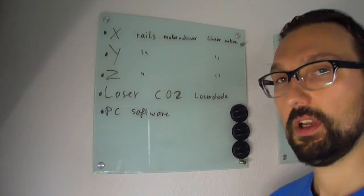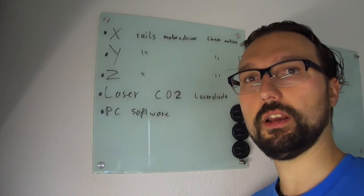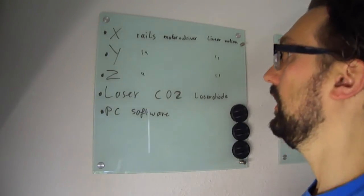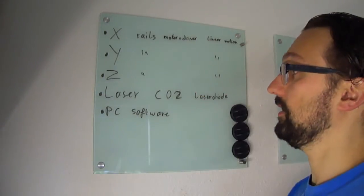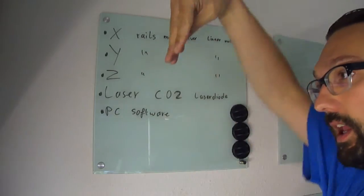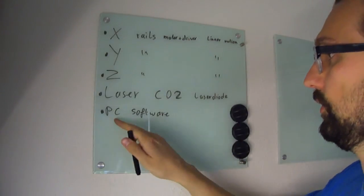Well I did some research and came up with the following items that I need. So I need an X, Y and Z axis - so movement in this direction, this direction and up and down. And of course I need a laser and of course I need a PC with some software to run the whole thing.